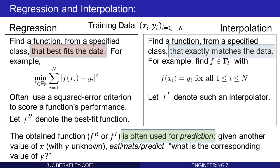The obtained function, as I mentioned, is often used for prediction. Given another value of x with y unknown, estimate or predict what's the corresponding value of y if it had been generated from the same process which produced the training data.